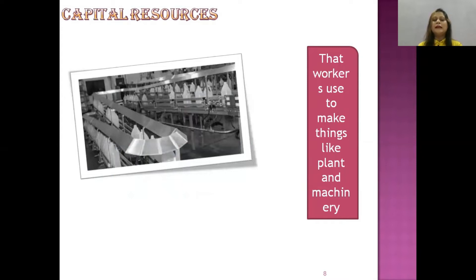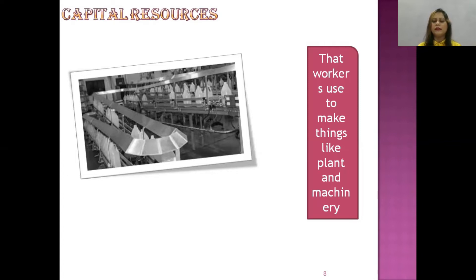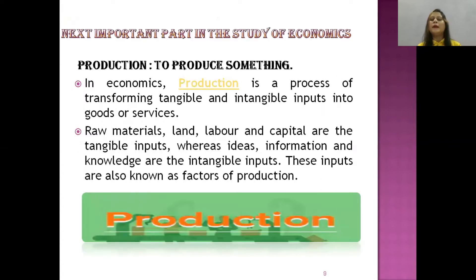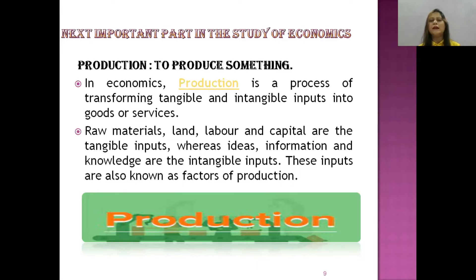Let us suppose that we have to make a building — we use a crane or machinery which is used on construction sites, which is called capital resources. The plant and machinery used in industry is called capital resources. So the three types of resources are: natural, human, and capital.